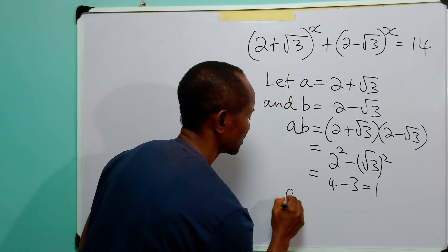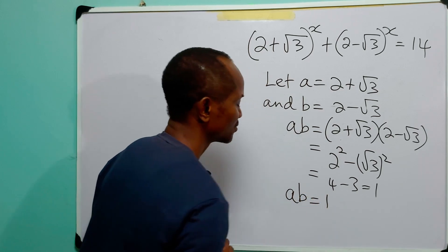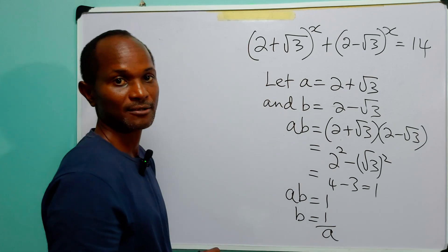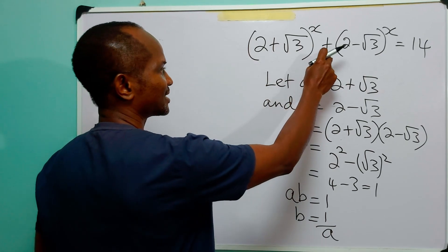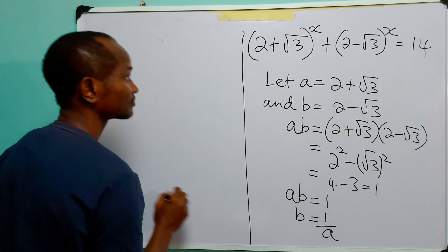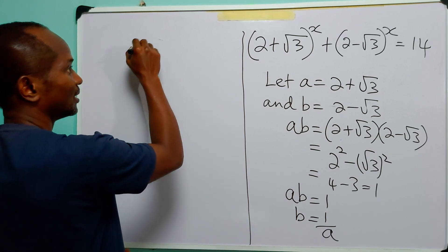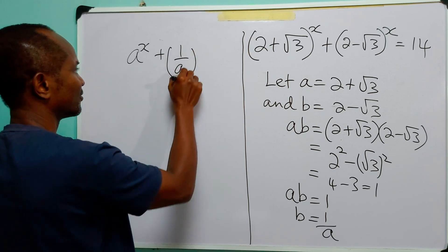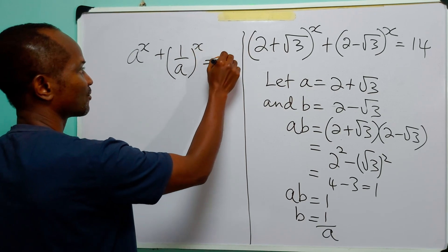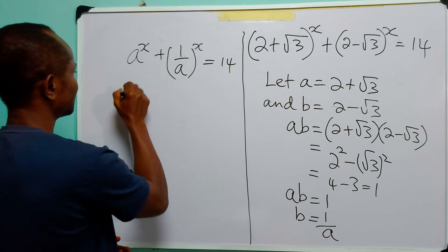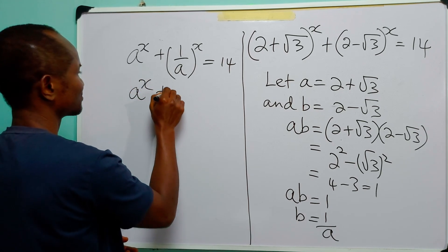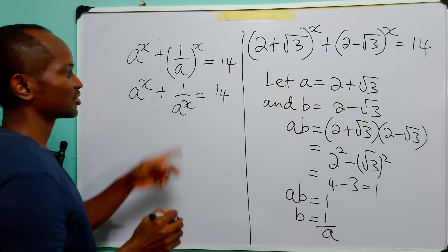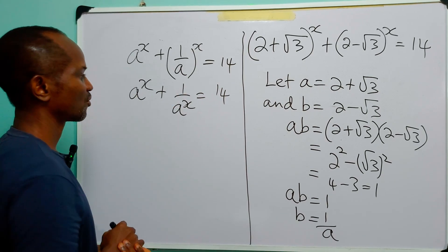So we have that the product AB is equal to 1, and therefore B is equal to 1 over A. We can now write the equation as A raised to power x plus 1 over A raised to power x is equal to 14, because 1 raised to any power remains 1.